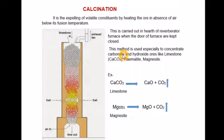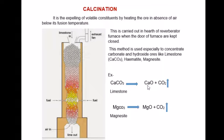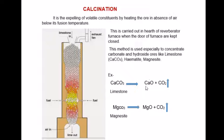This process is generally used to concentrate carbonate and hydroxide ores, like limestone. Here you can see the example: limestone is heated in a reverberatory furnace in absence of air. Calcium carbonate (CaCO₃) converts into calcium oxide (CaO) and releases carbon dioxide (CO₂) — that means the calcium carbonate converts into calcium oxide by removing CO₂.